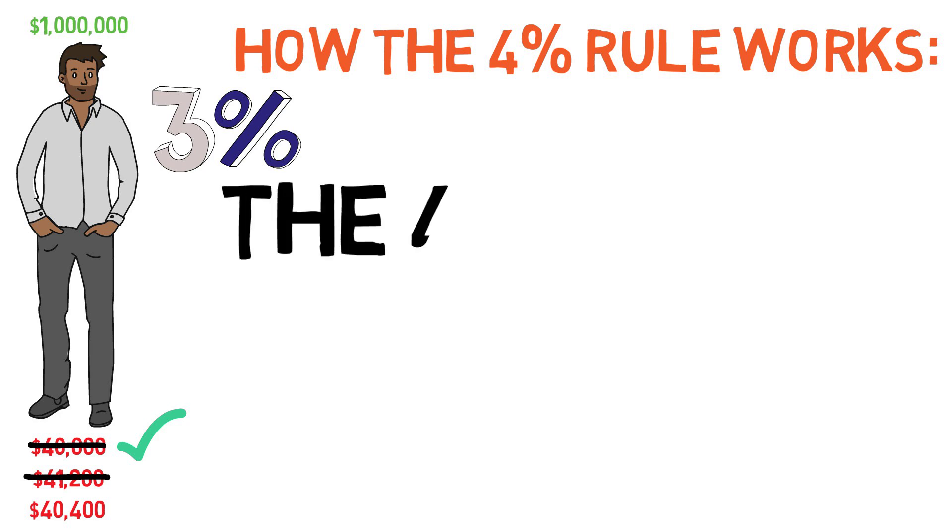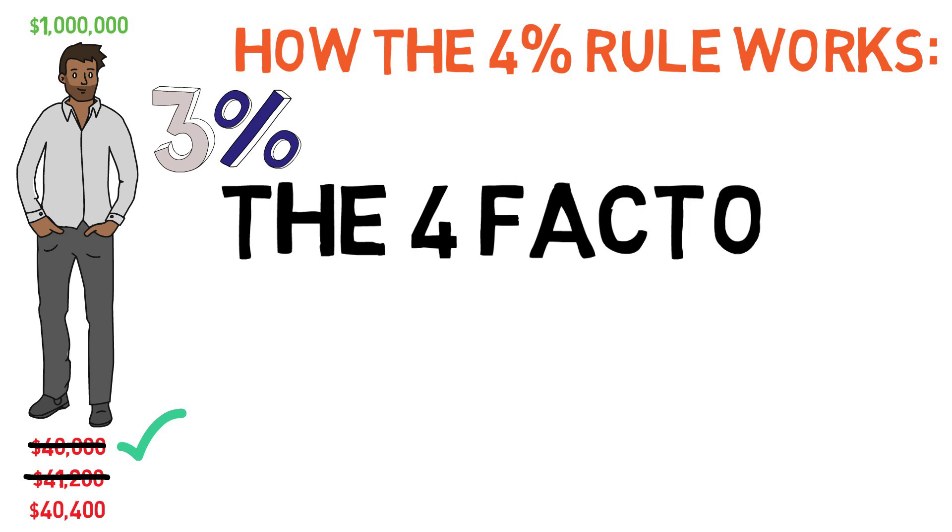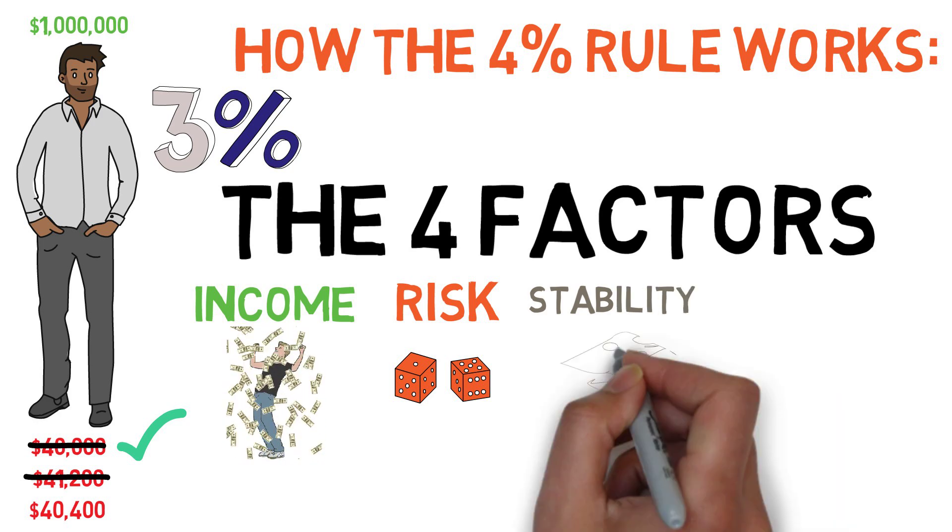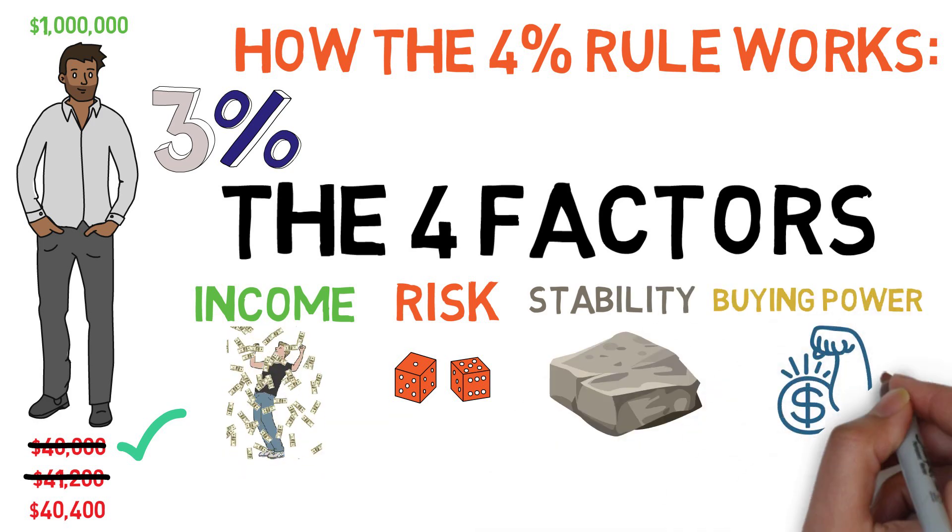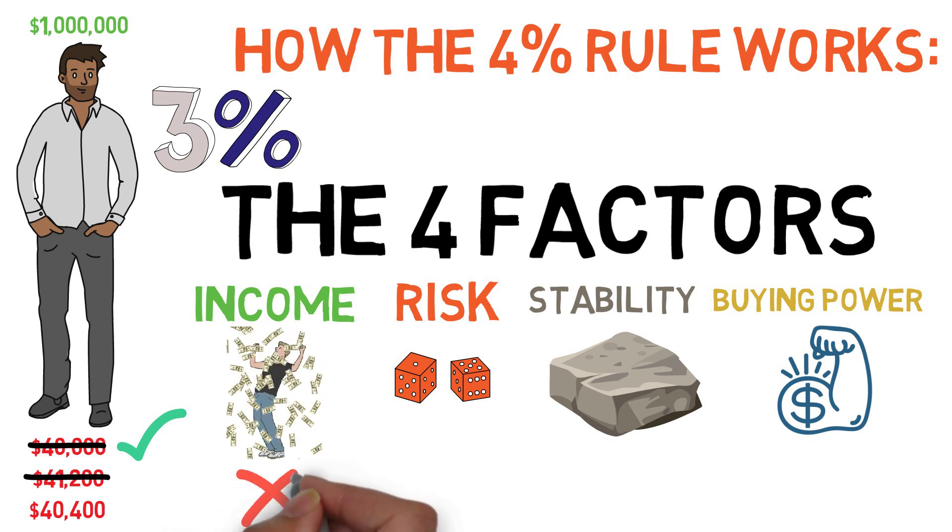In terms of how this strategy is graded using the four factors of retirement which if you don't know are income, risk, stability, and buying power I've got a whole video on them in the description if you want to learn more. In my personal opinion the 4% rule is below average in income. Dynamic strategies that focus on this factor as their primary selling point are far better in this regard than the 4% rule. It's roughly average to maybe slightly below average in risk though using the 3% rule can improve this score and it's strong in both stability and buying power thanks to its constant adjustments for inflation and its lack of freezes or reductions.